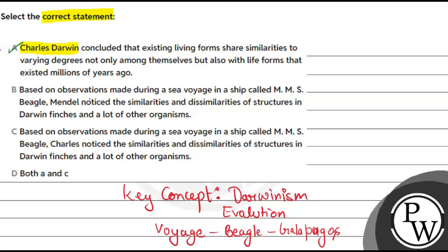The next statement says: based on observations made during a sea voyage in a ship called MMS Beagle, Mendel noticed — which is wrong, because it was not Mendel but Charles Darwin who was on the ship called Beagle, and he noticed similarities and dissimilarities of structures in Darwin's finches. So Statement B is incorrect. Statements A and C are both correct, hence our final answer will be option D.